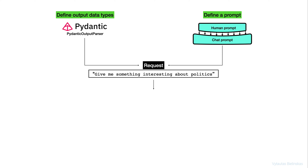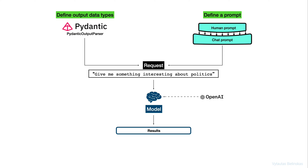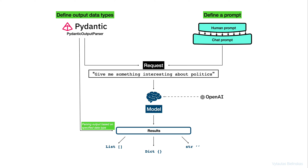The request uses parameters we set up previously in the Pydantic output parser class and in the chat prompt, which uses the human prompt for additional information for the LLM. The request can look like: give me something interesting about politics. The next step is to set up our LLM model with LLM chain, which takes our request and returns meaningful results. In this tutorial, we will use the OpenAI API. Finally, the output is the result — required information in the format specified by the Pydantic output parser.